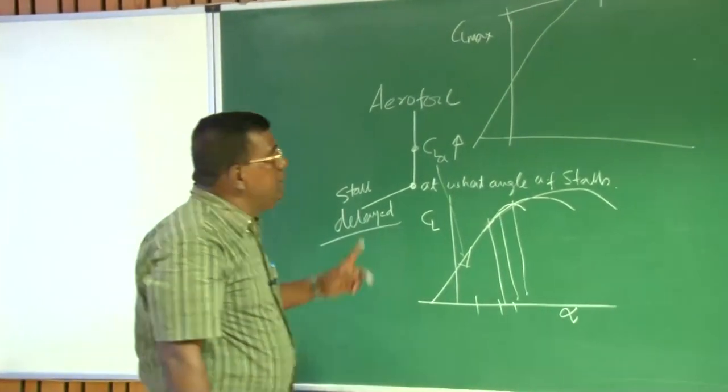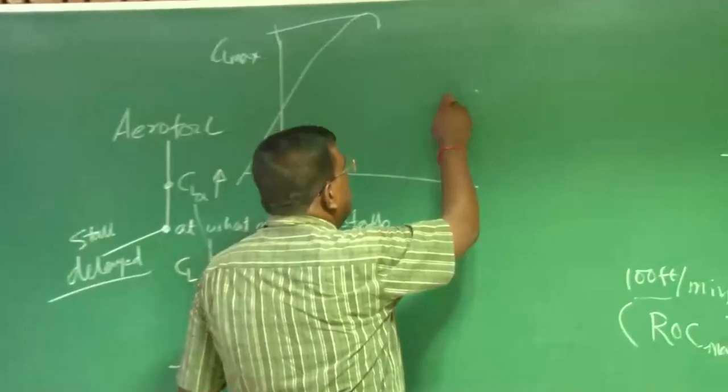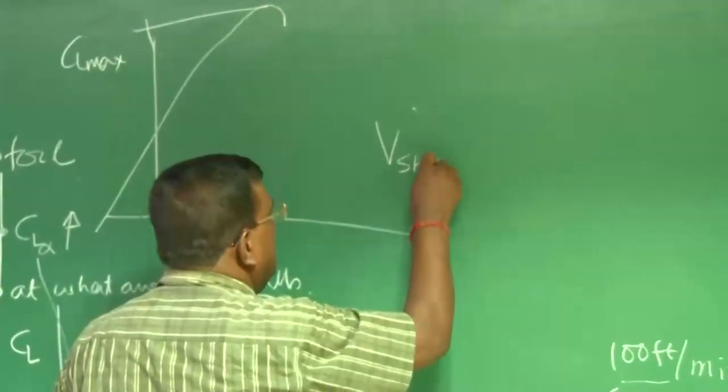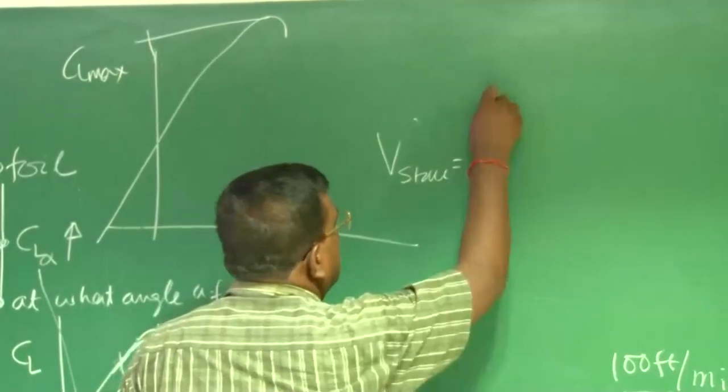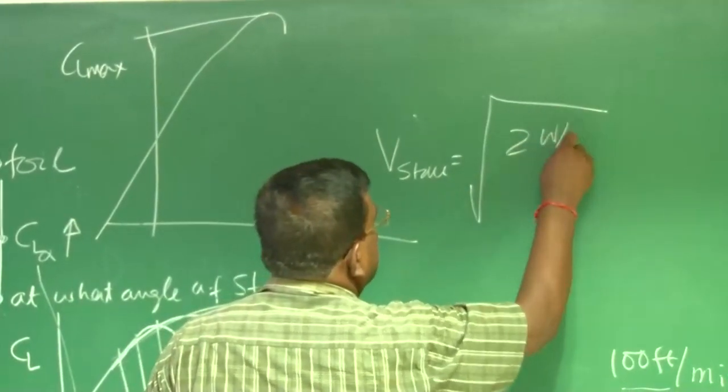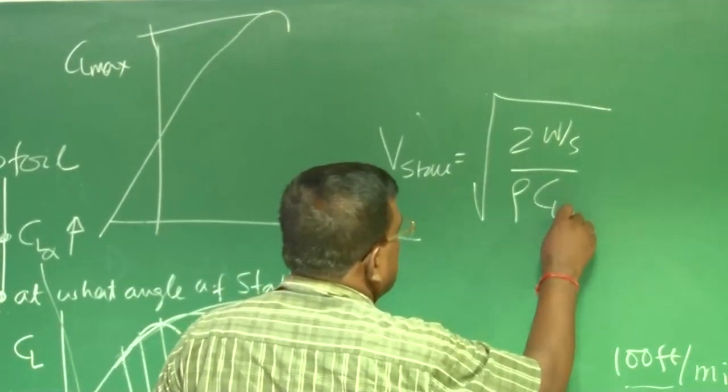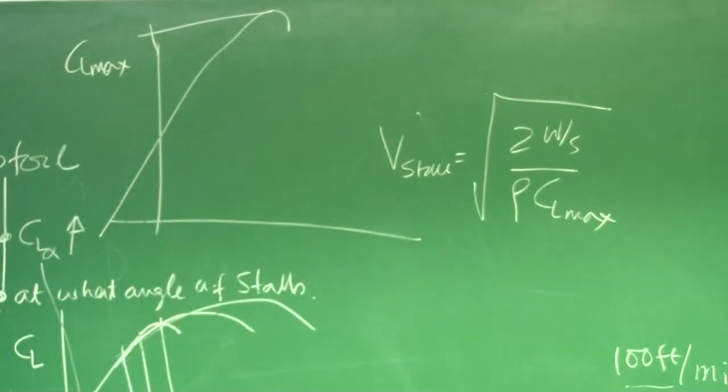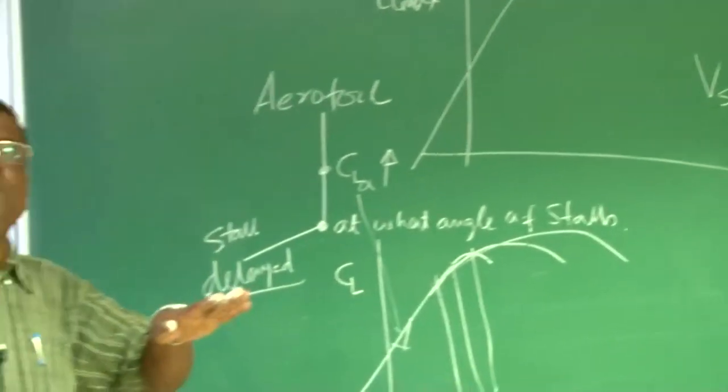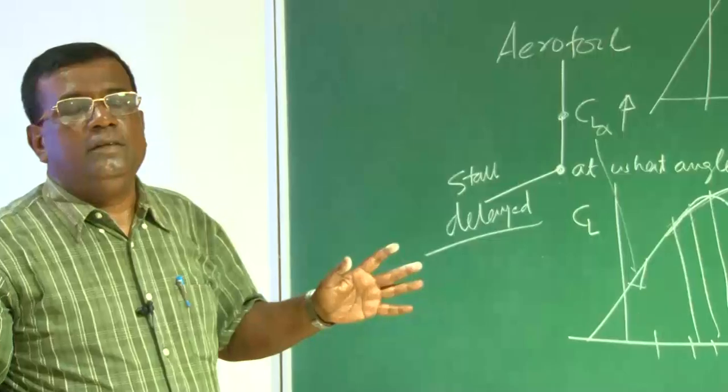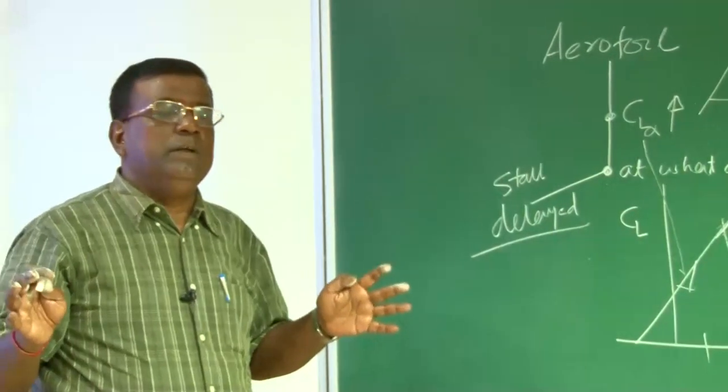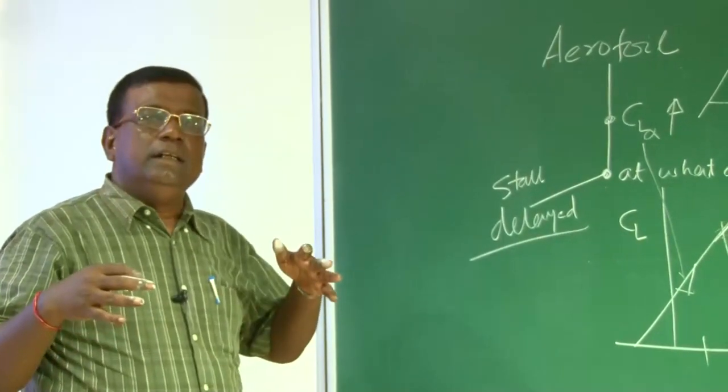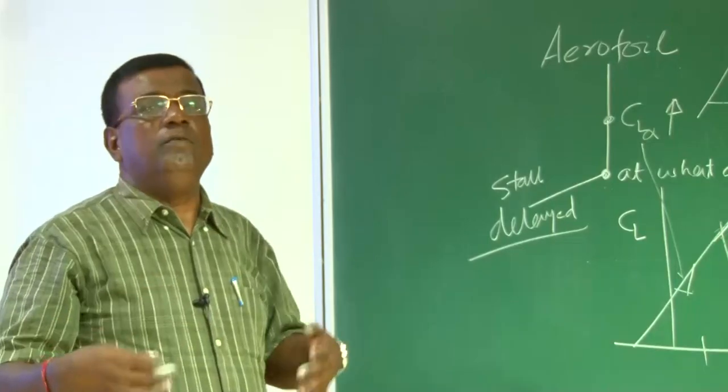Why? Because if CL max is high, then V stall, V stall is low, so he is happy. So, when he goes for a takeoff, landing is fairly comfortable, because he can get the smaller value of V stall.